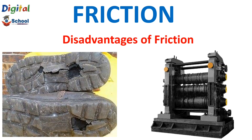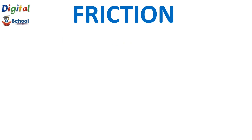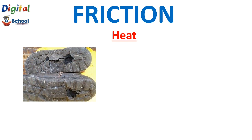Now we will see the disadvantages of friction. One disadvantage of friction is heat. Friction produces heat. For example, the sole of a shoe gets worn out over time — this happens because of the heat generated by friction, which damages the shoe's sole.